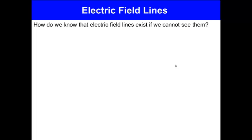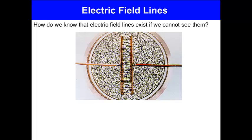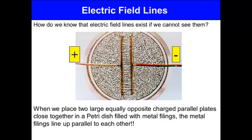How do we know that electric field lines exist if we cannot see them? So here is an example of a magnet in iron filings. When we place two large, equally opposite charged parallel plates close together in a Petri dish filled with metal filings, the metal filings line up parallel to each other.